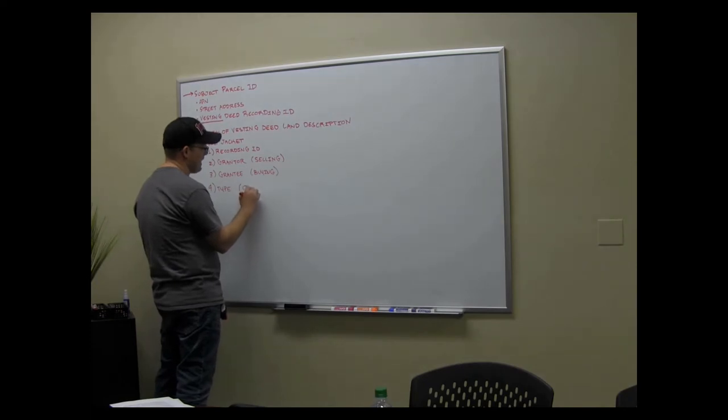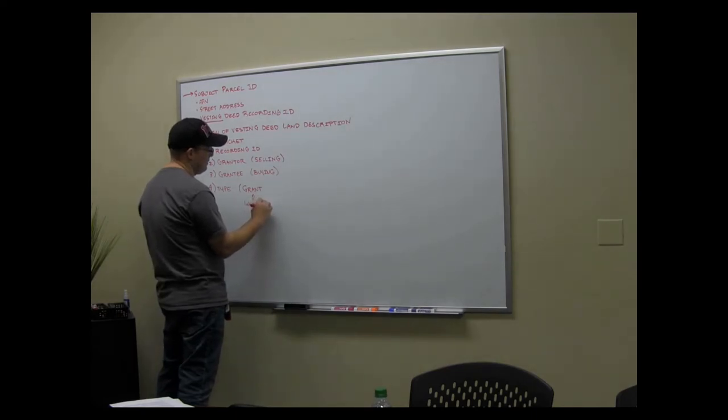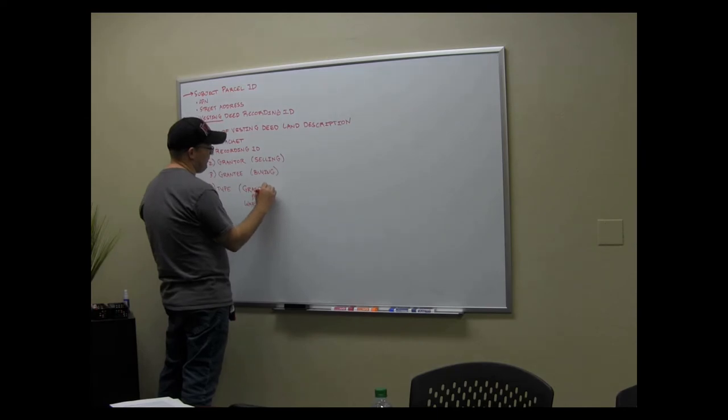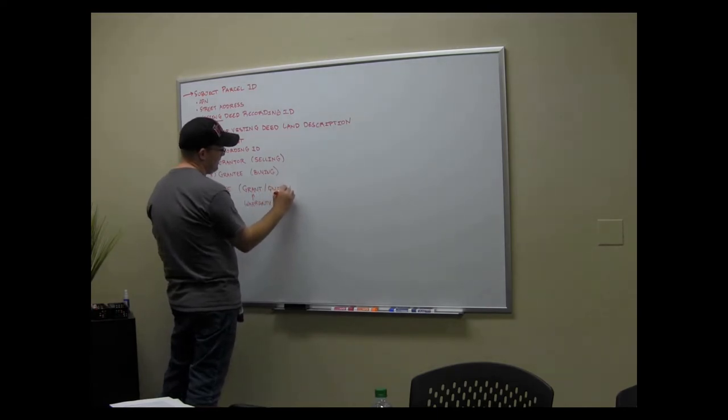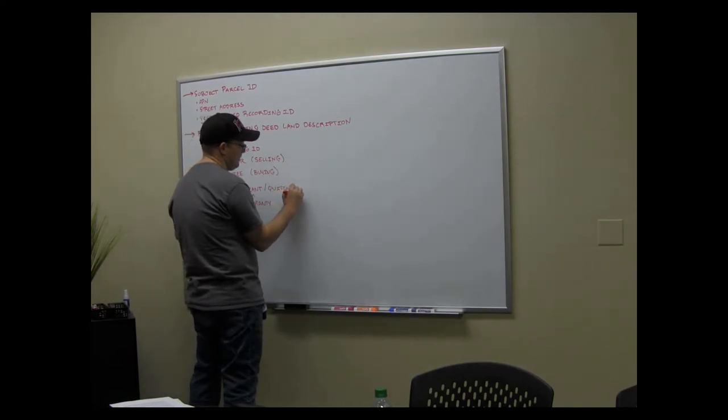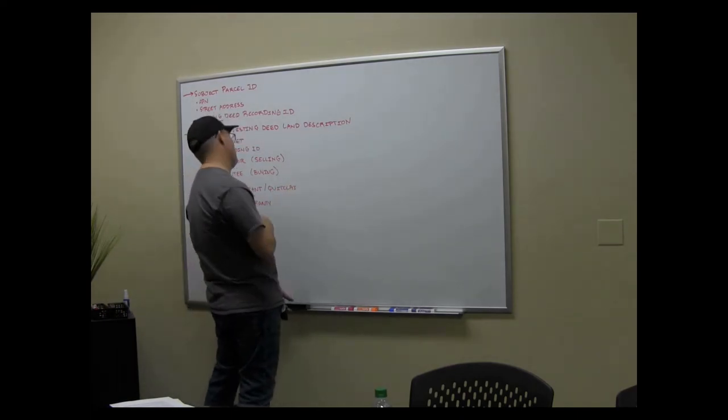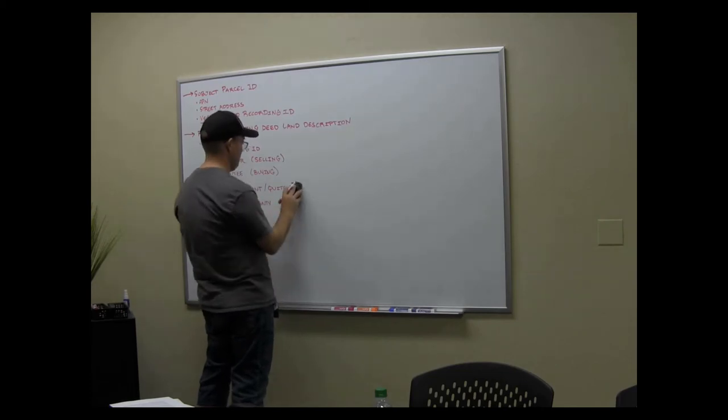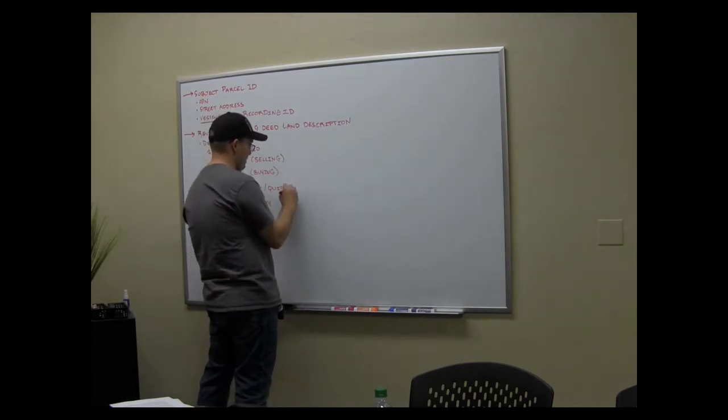Sometimes they put a big bold print at the top, sometimes you have to read the clause. But there's a few types and I want you to note the type in the note. It's most commonly a grant deed. Those are also called a warranty deed. We're not going to talk about how they're different today.